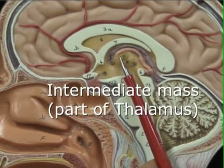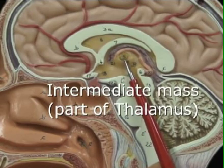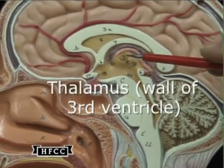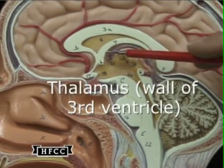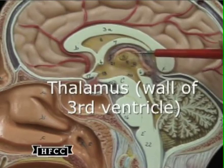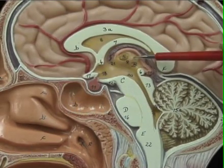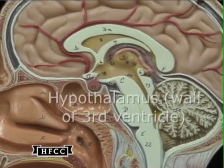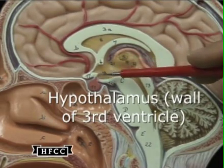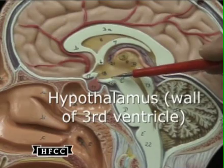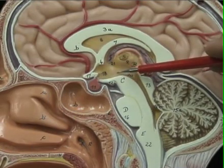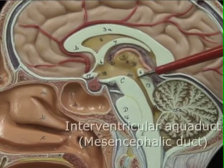That dark brown at number five is the intermediate mass — it's part of the thalamus that connects the right thalamus to the left thalamus. There's the right thalamus, that wall of tissue I'm circling that forms the wall of the third ventricle. And from that little indention downward, that wall is the hypothalamus — a very multifunction structure that makes the wall of the third ventricle.